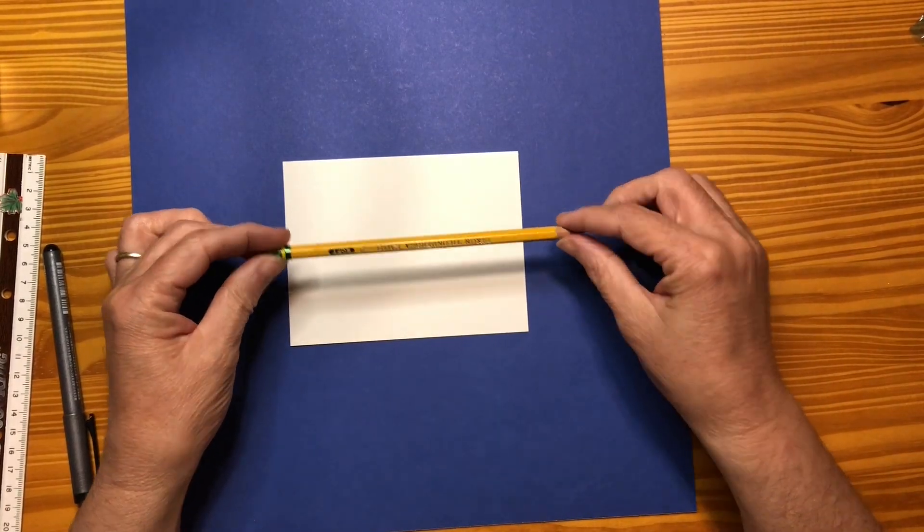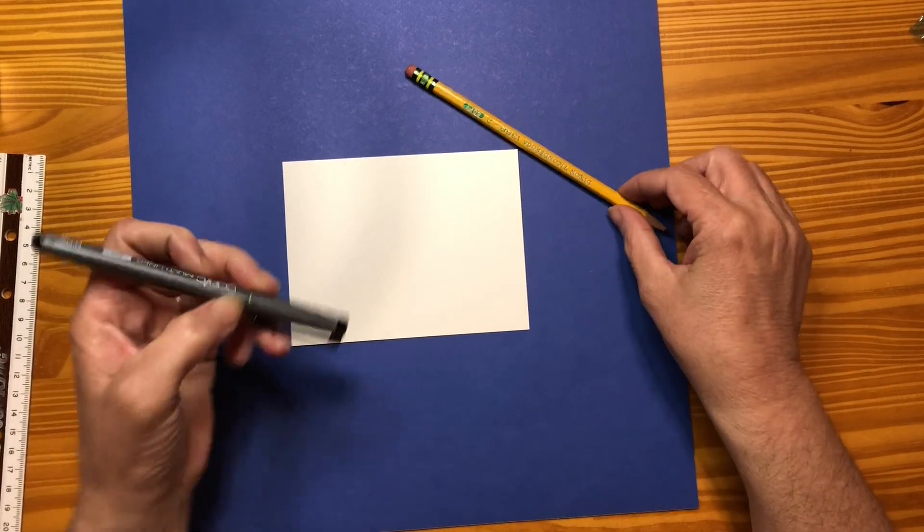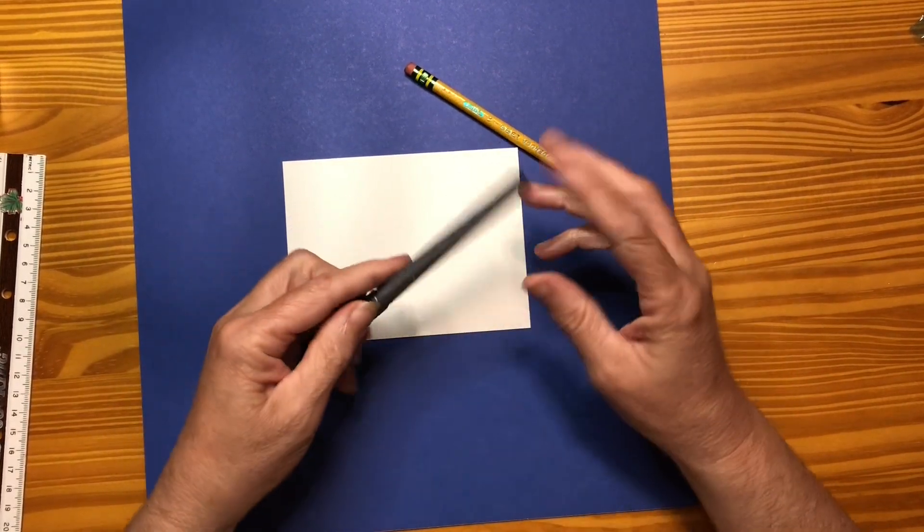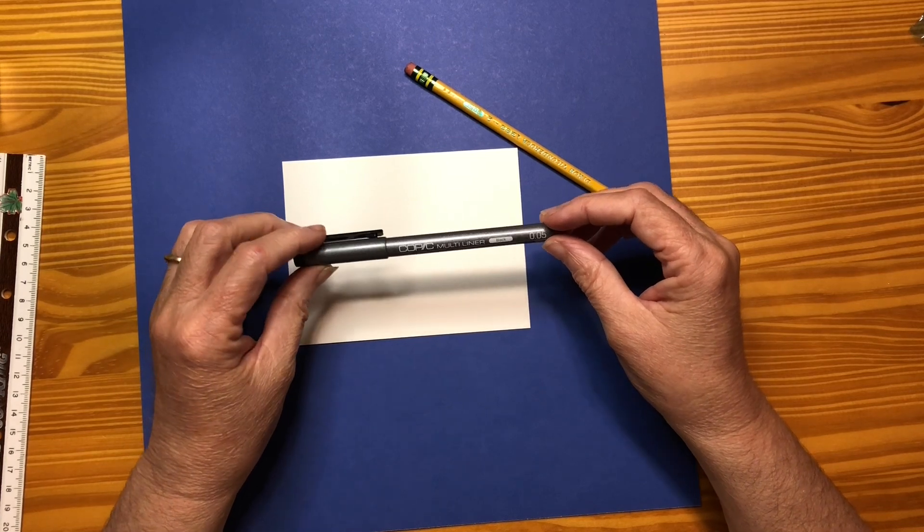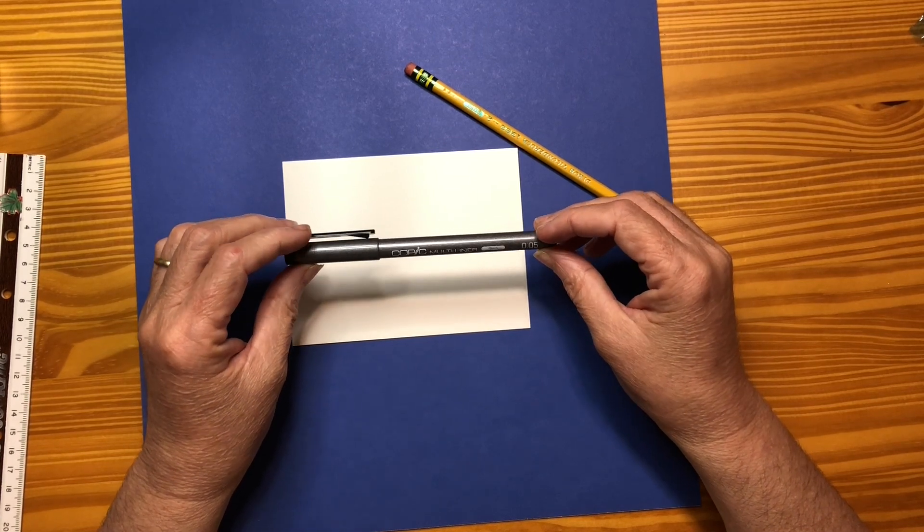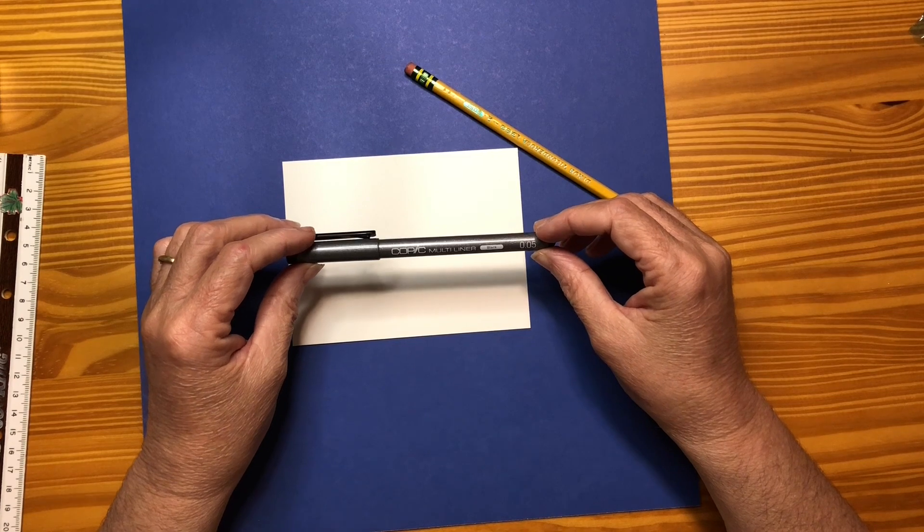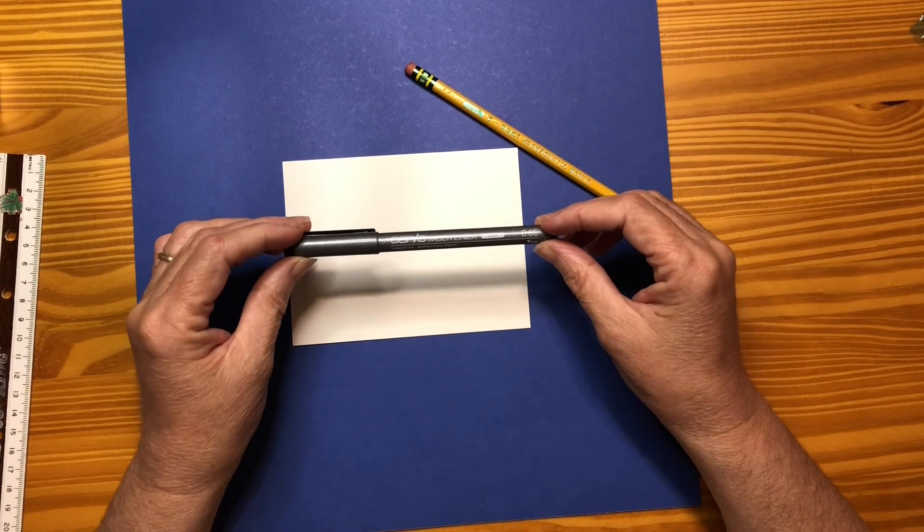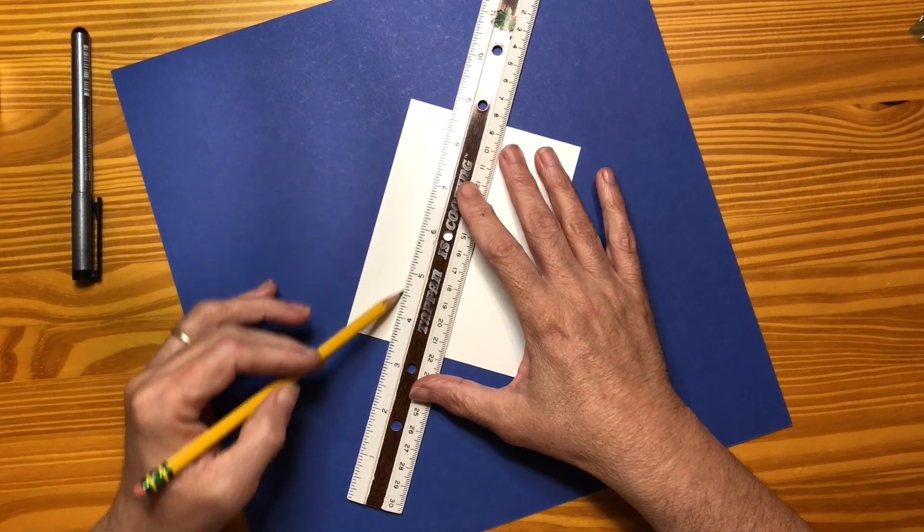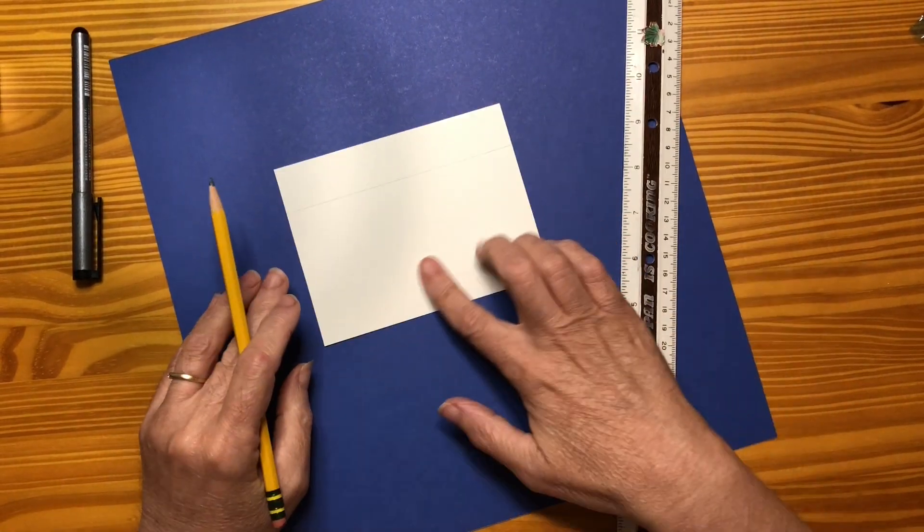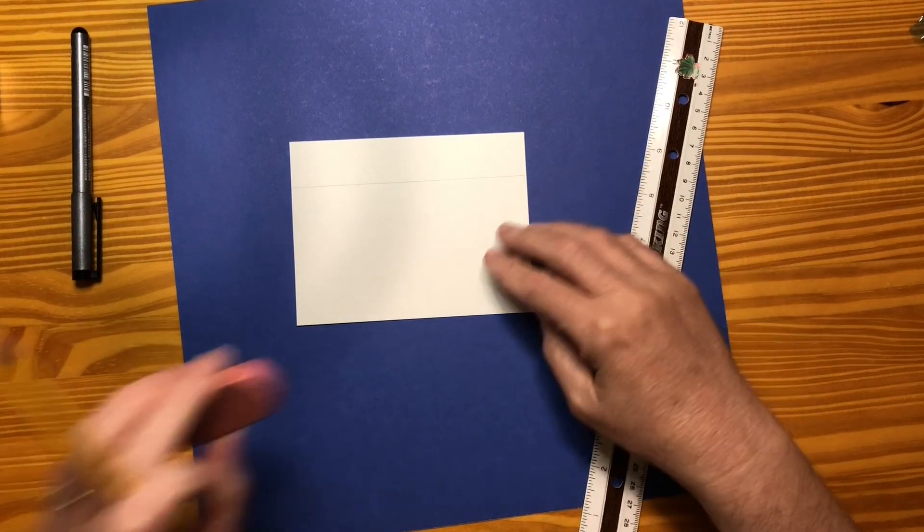I'm going to first use a pencil to kind of outline and get my measurements right. Then I will go ahead and outline it again with the multi-liner Copic because I will probably color this in alcohol markers and this is the best one for that. Eyeballing where I want my header to be, just put a light pencil on that.